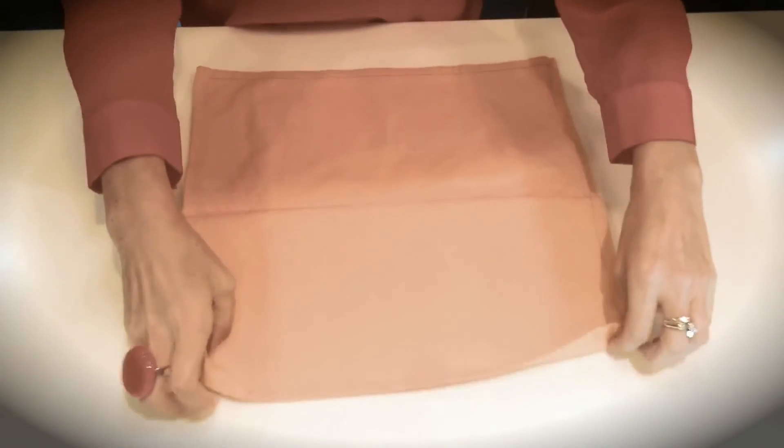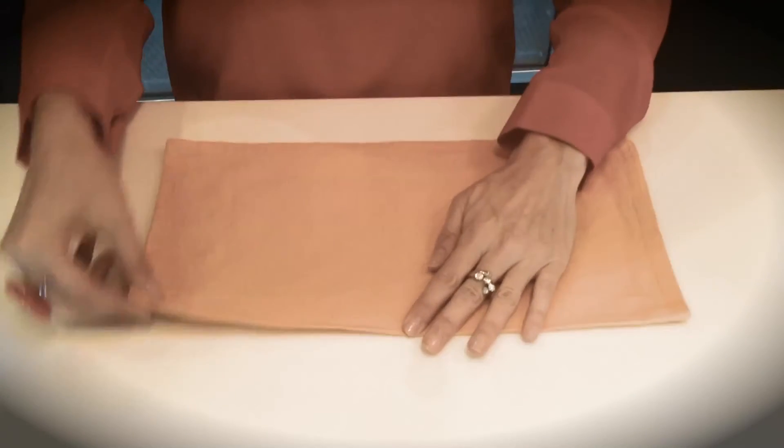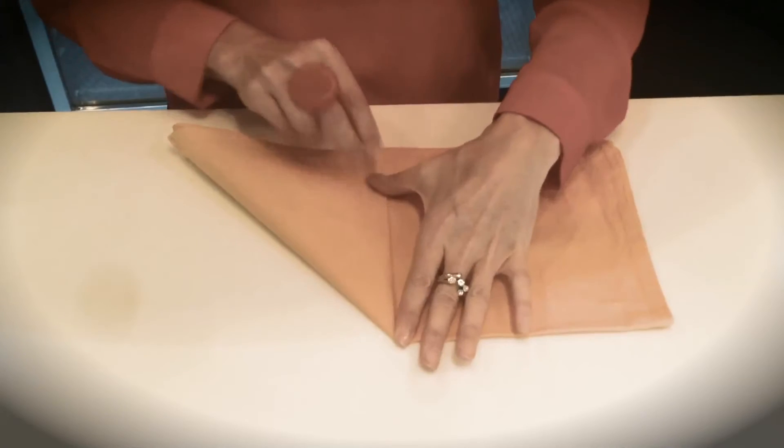From here, you're going to take the top corners and fold them down so you've got a rectangle. Fold one top corner down to the bottom so you've formed a triangle.